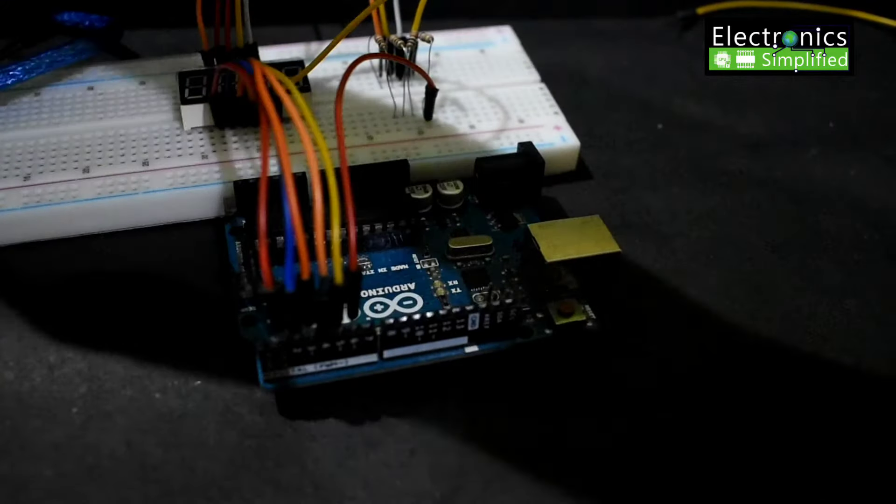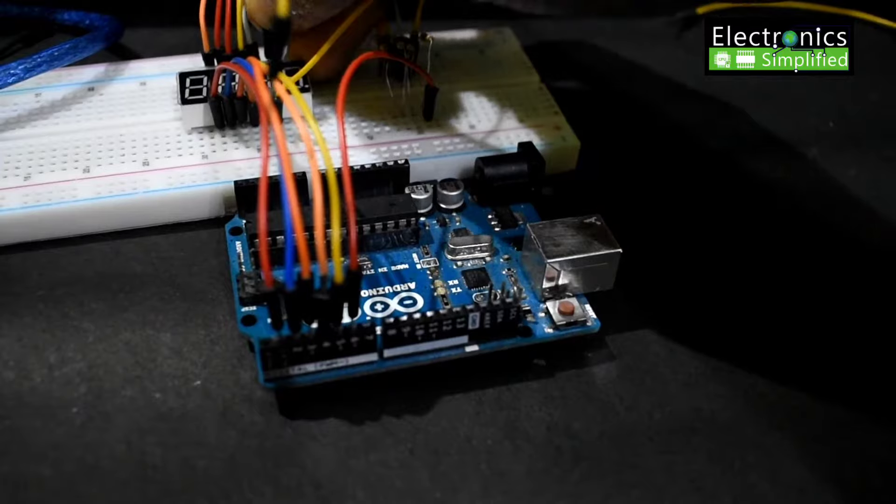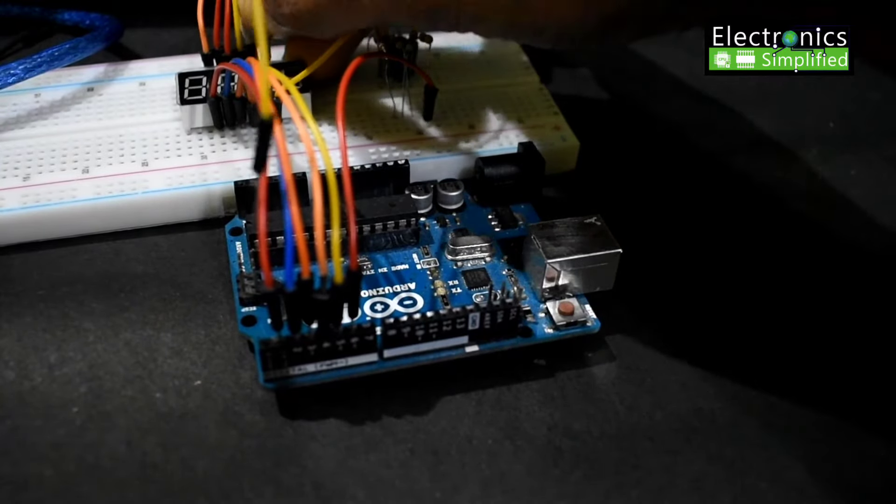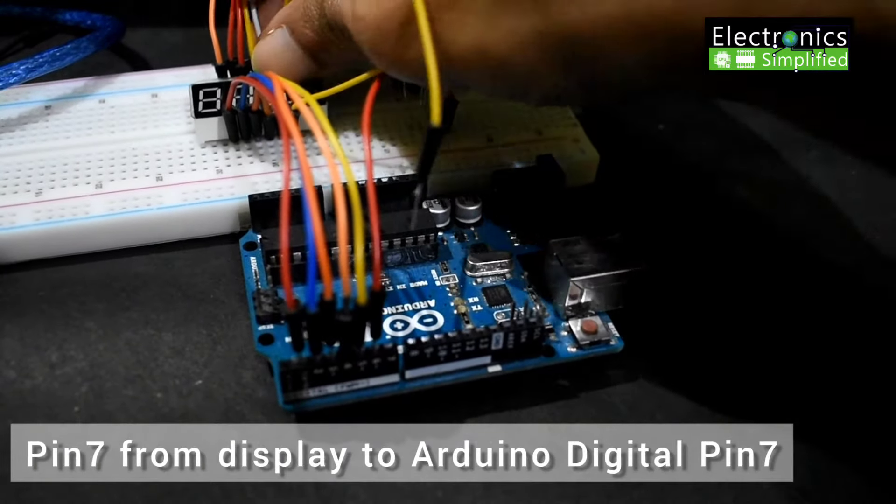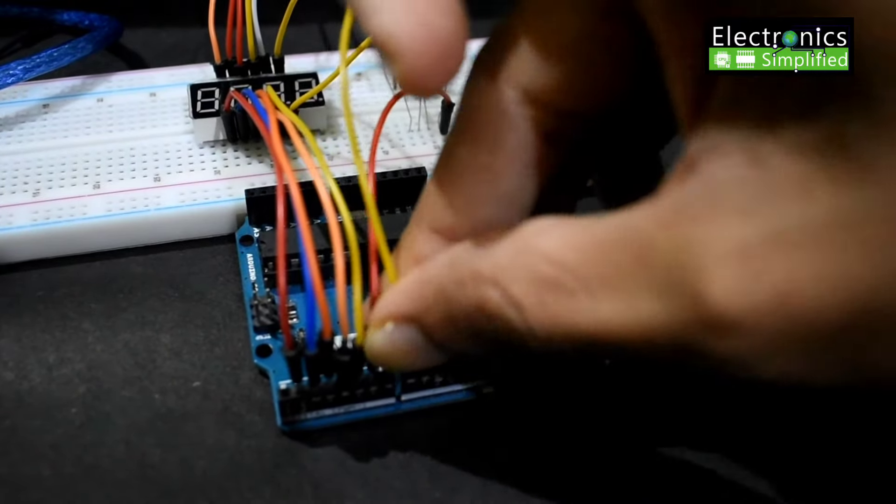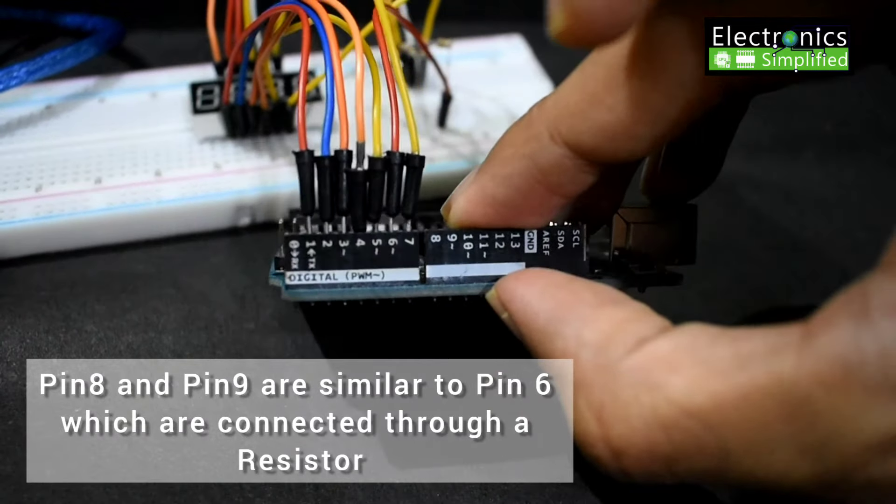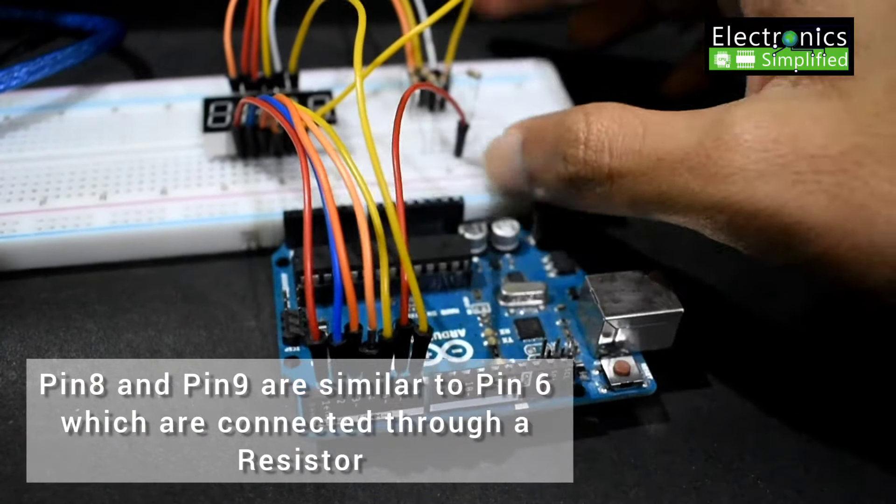Yeah. In a similar way that we connected pin number 6 from the display to the Arduino digital pin 6. So pin number 7 from the display goes to Arduino digital pin 7. And 8 and 9 I said are similar to pin 6. So let's connect them through the resistor.